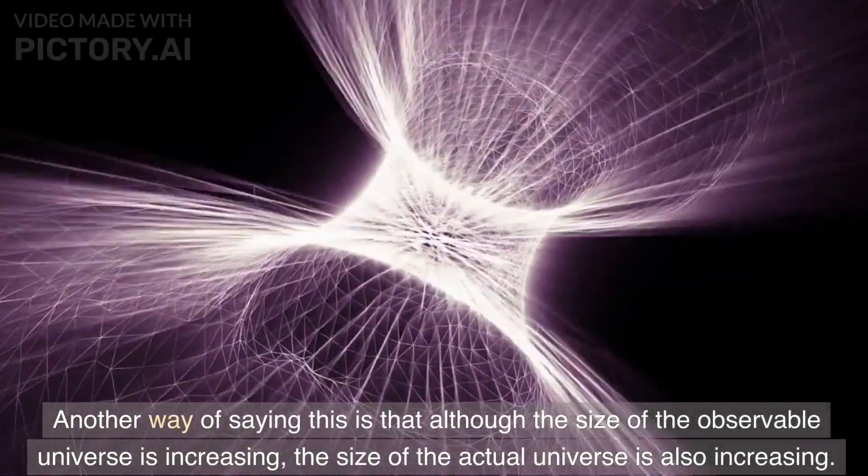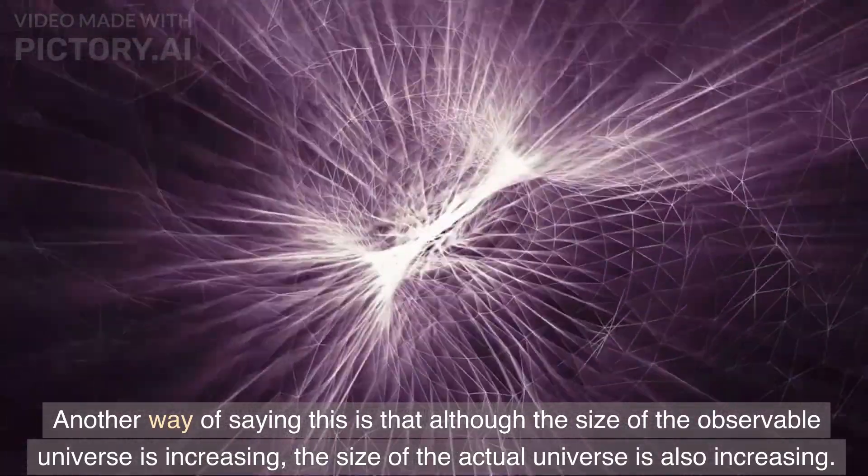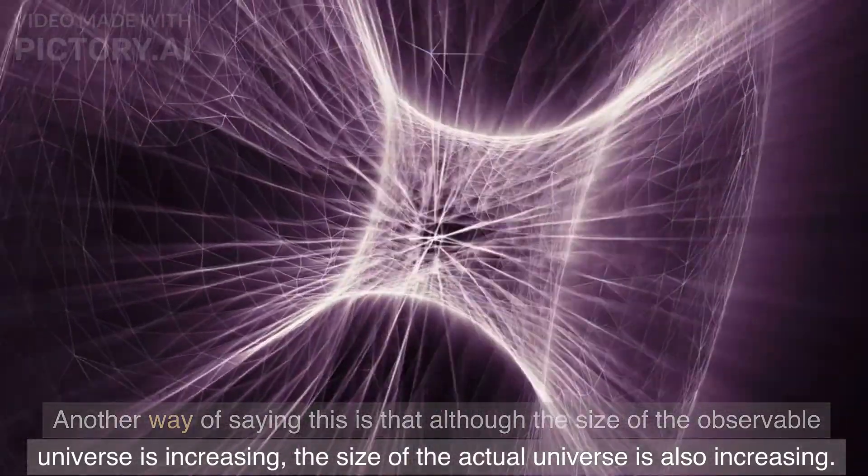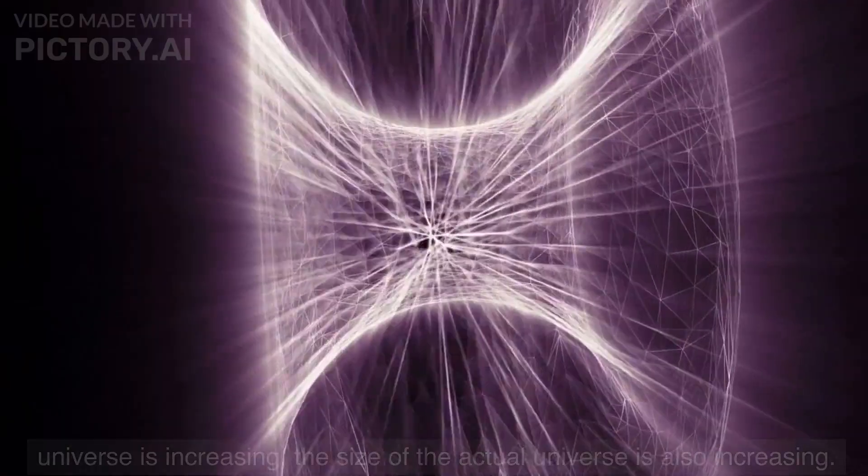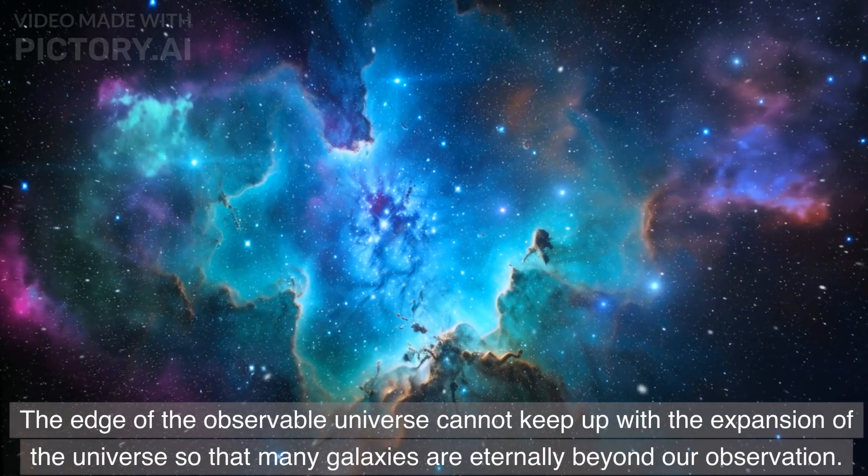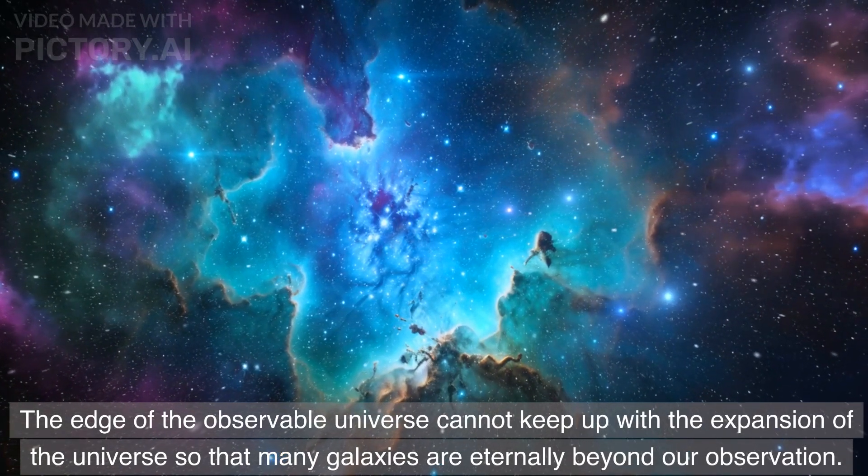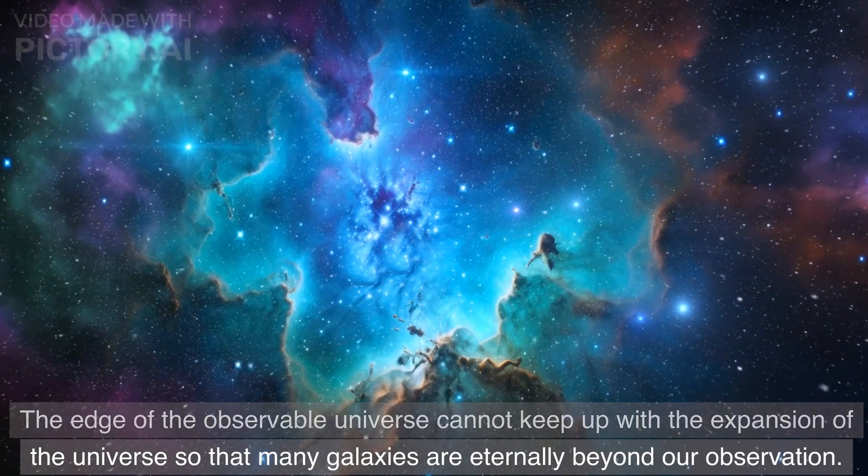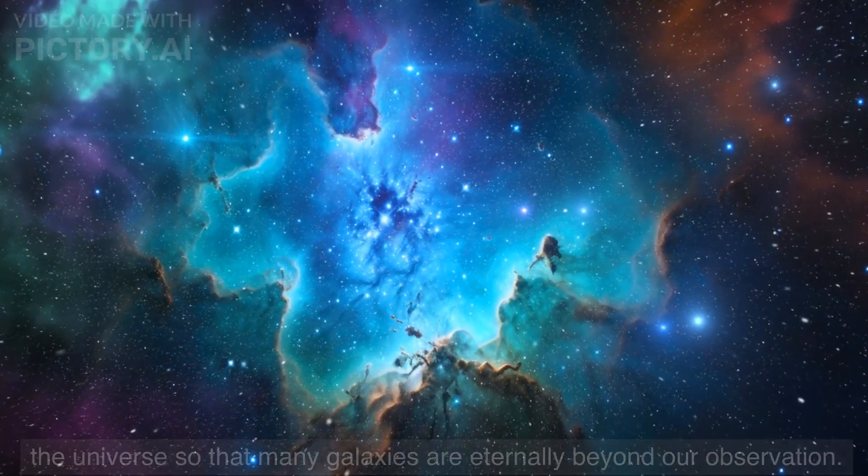Another way of saying this is that although the size of the observable universe is increasing, the size of the actual universe is also increasing. The edge of the observable universe cannot keep up with the expansion of the universe so that many galaxies are eternally beyond our observation.